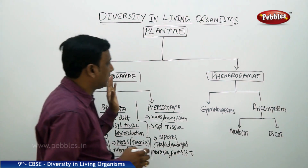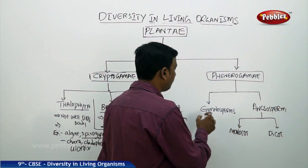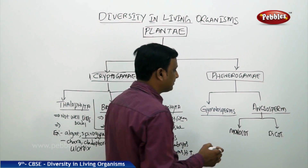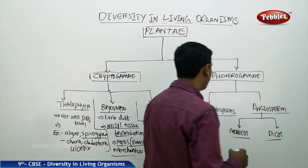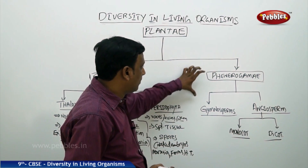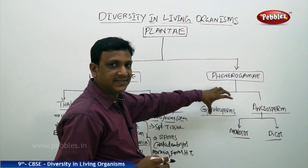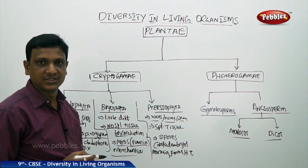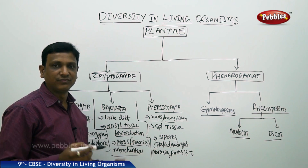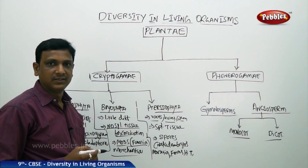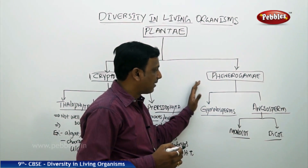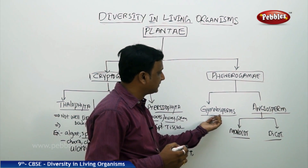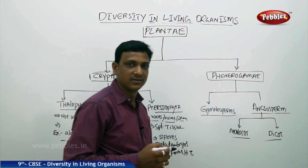Now let us go to the next group: Phanerogamae. Phanerogamae consists of two kinds: Gymnosperms and Angiosperms. The Angiosperms are further divided into monocots and dicots. Here you find the real plants and trees you see around you — bigger trees, fruit plants, flower plants, grains, paddy, vegetables, and different kinds of plants with commercial usage. All those plants come under this group.